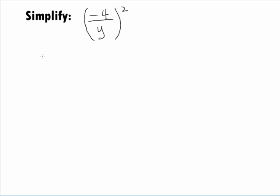In this example, we want to use the Quotient to Powers Rule for exponents to help us simplify the expression negative 4 over y, all raised to the second power.